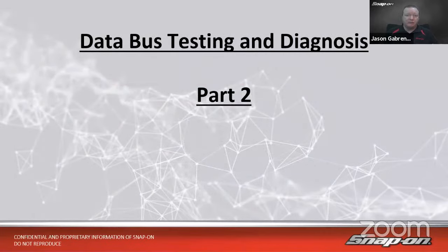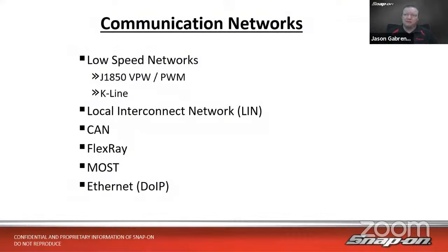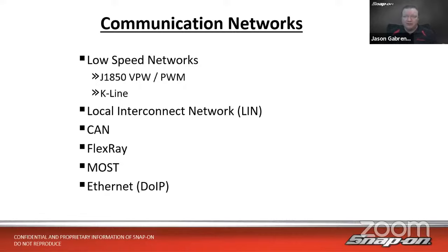Our topic today is what we're calling data bus testing and diagnosis, and this is part two of two. If you were with us last week, we went through part one — our basic networking strategy and how we would diagnose basic networks, such as low-speed networks: J1850 variable pulse width and pulse width modulated versions, K-Line bus, LIN bus — a single-wire network used for master and slave control of motor switches and the like — and then we did a little bit on CAN.